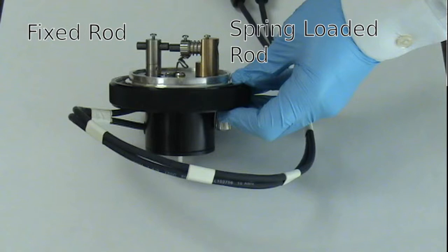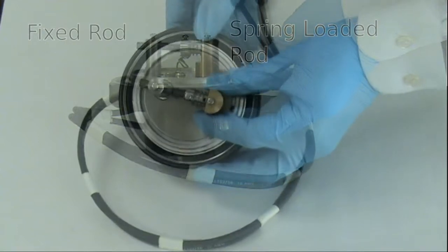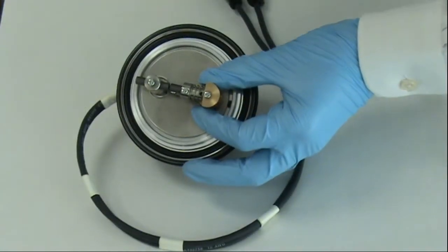The spring-loaded rod needs to be replaced after every use. After cooling, loosen the standard screw on the spring-loaded post and remove the used rod.